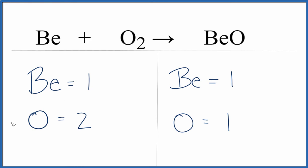Let's start by trying to get the oxygens to be equal on both sides of the equation. To do that, we can change the coefficient in front of the BeO, the beryllium oxide, to two. So now we have one beryllium here times the two.